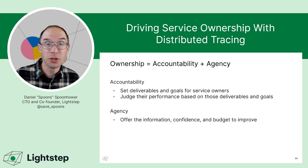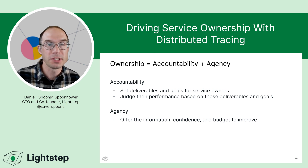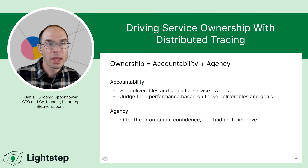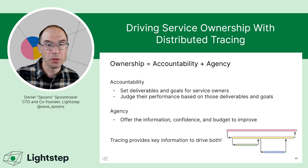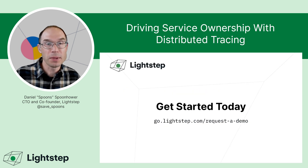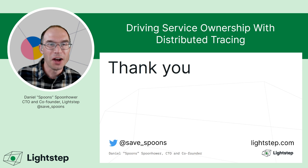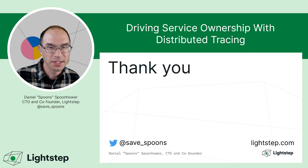To sum up, ownership has two important parts. Accountability: we want to set goals and deliverables for service owners and judge performance based on those goals. But just as important, we need to give them agency — the means, the information, the confidence, and the budget to improve the quality of service they're providing and meet those goals. Tracing provides key information to drive both of those things. LightStep is a best-in-breed distributed tracing solution — if you're interested, go to go.lightstep.com/request-a-demo. I'm Spoons, CTO at LightStep. You can find me on Twitter at save_underscore_spoons or at spoons@lightstep.com. Thanks.